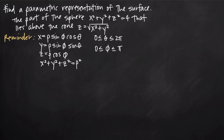In this video, we're going to be talking about parametric equations of a surface. In this particular problem, we've been asked to find a parametric representation of the surface which is the part of the sphere x squared plus y squared plus z squared equals 4, that lies above the cone with equation z equals the square root of x squared plus y squared. We just need to find parametric equations that represent the part of that sphere that's above the cone.